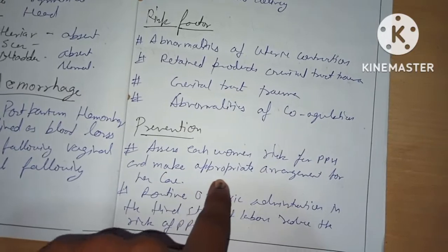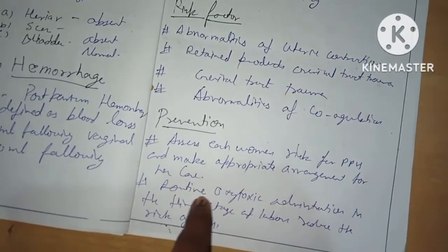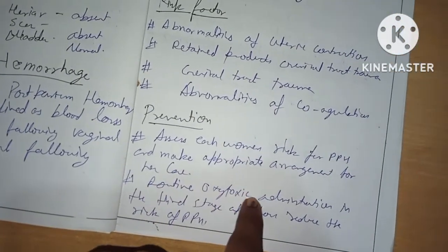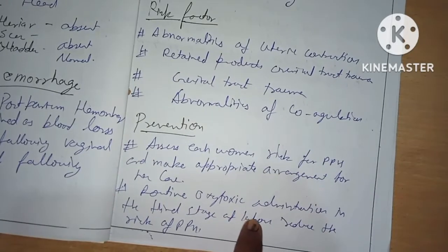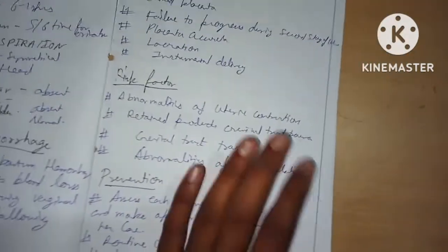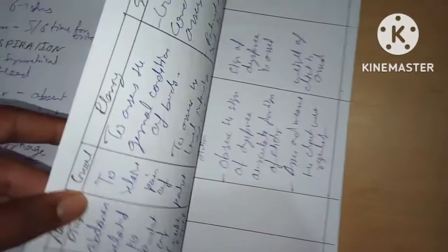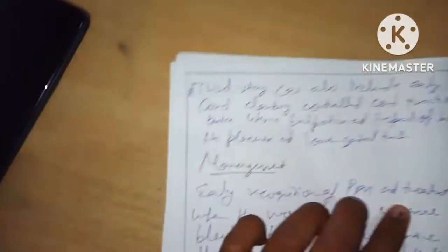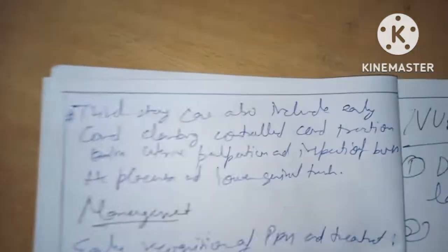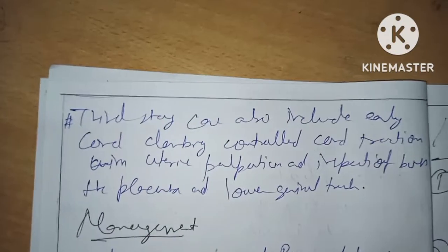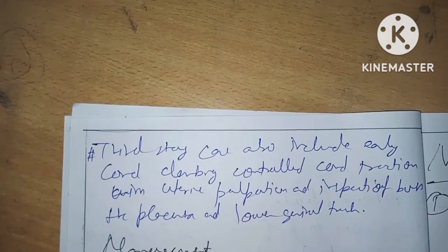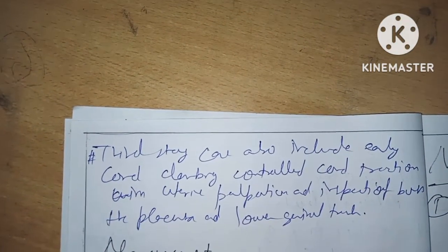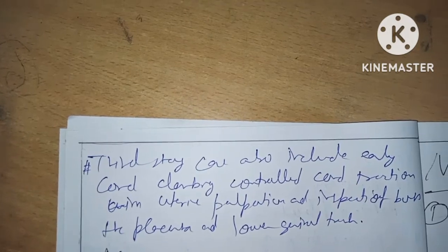Prevention includes routine administration of uterotonics in the third stage of labor to reduce the risk of PPH. Third-stage management can also include early cord clamping, cord traction, uterine palpation, and inspection of the placenta and lower genital tract.